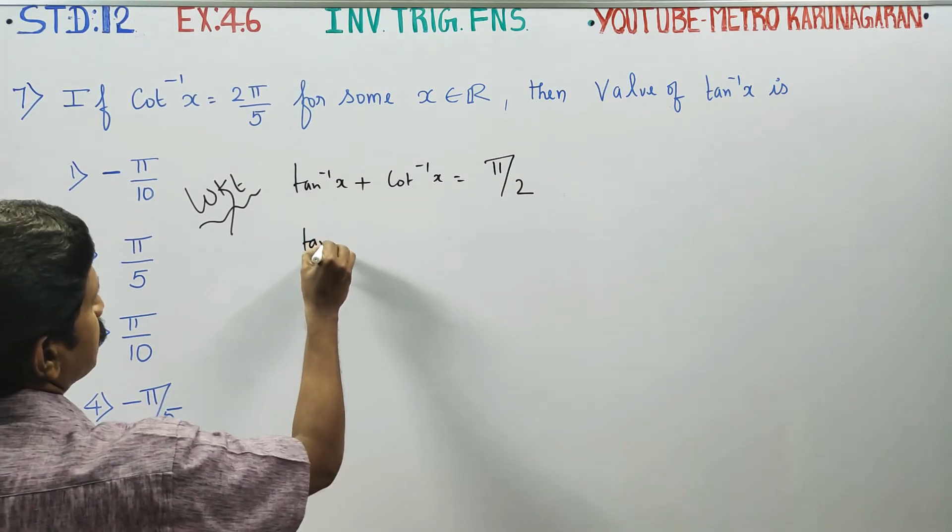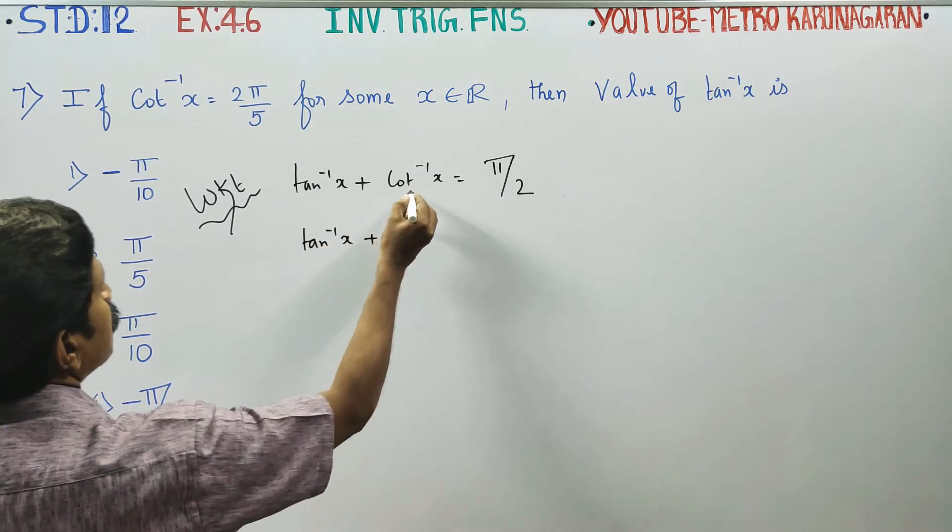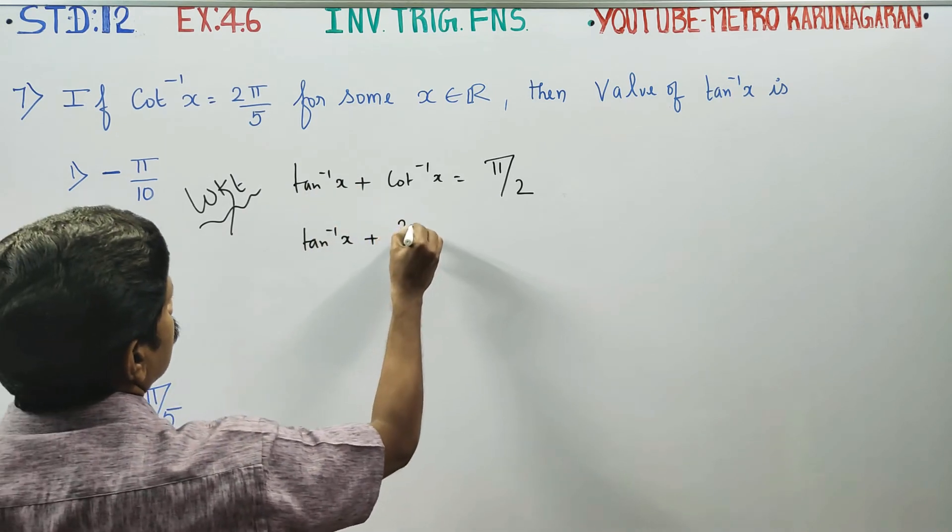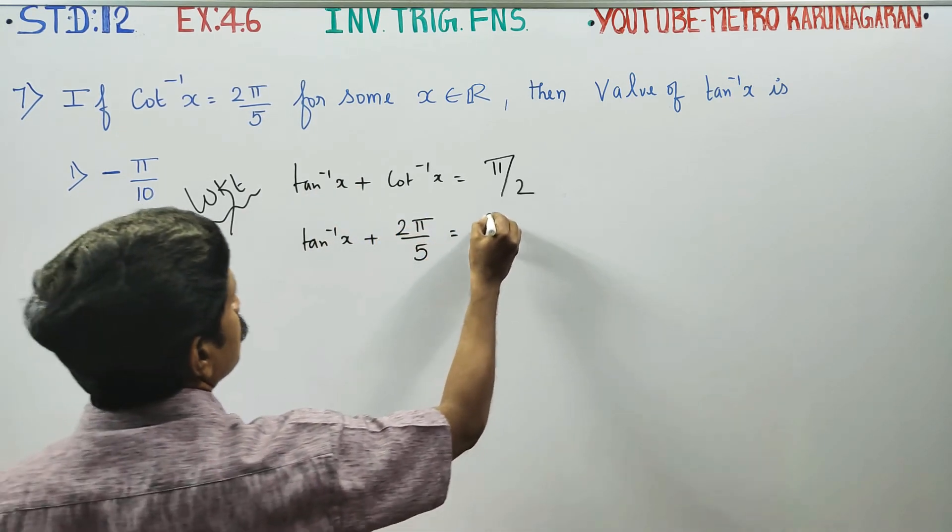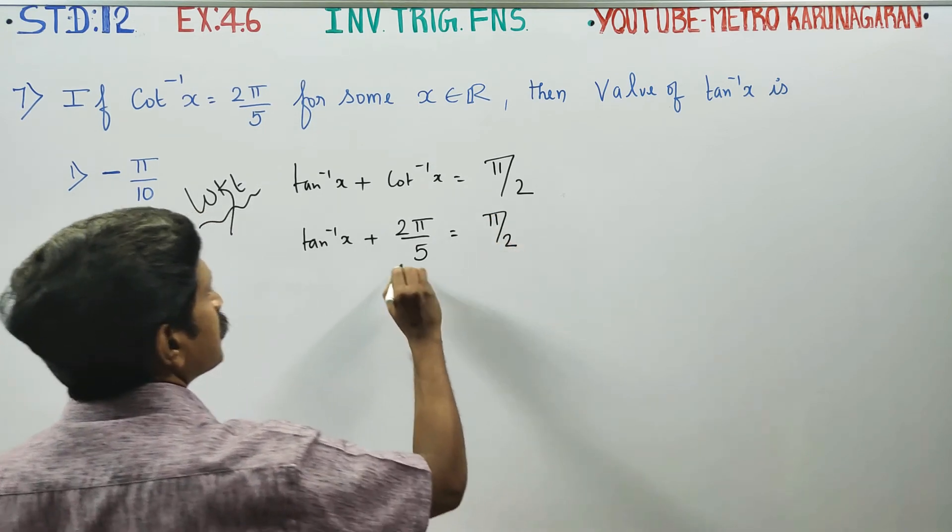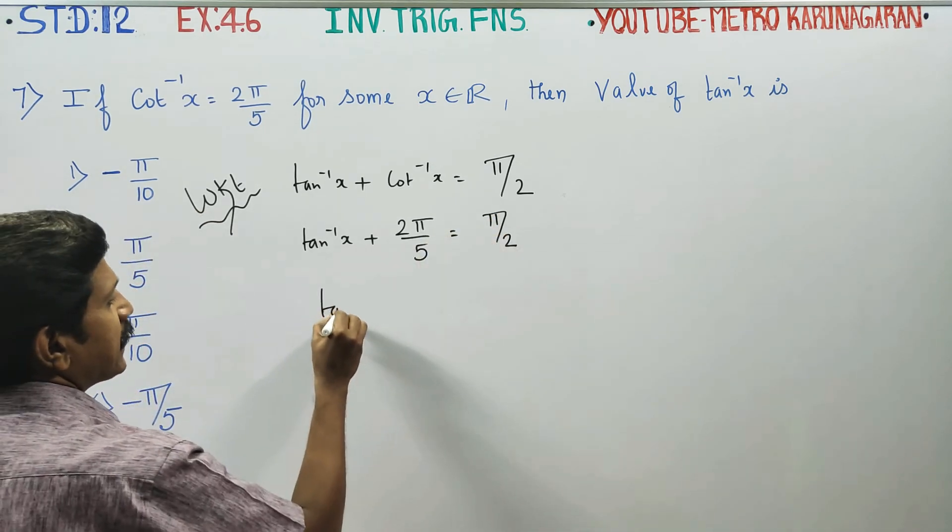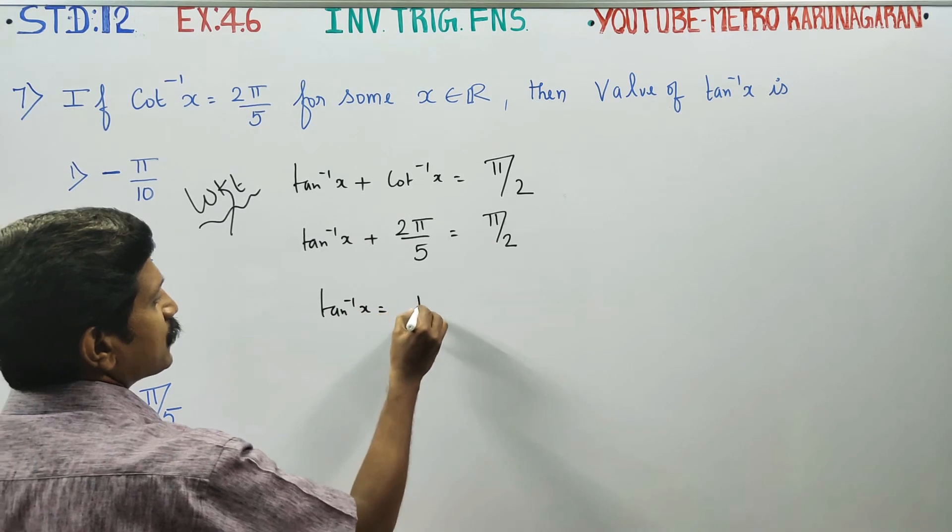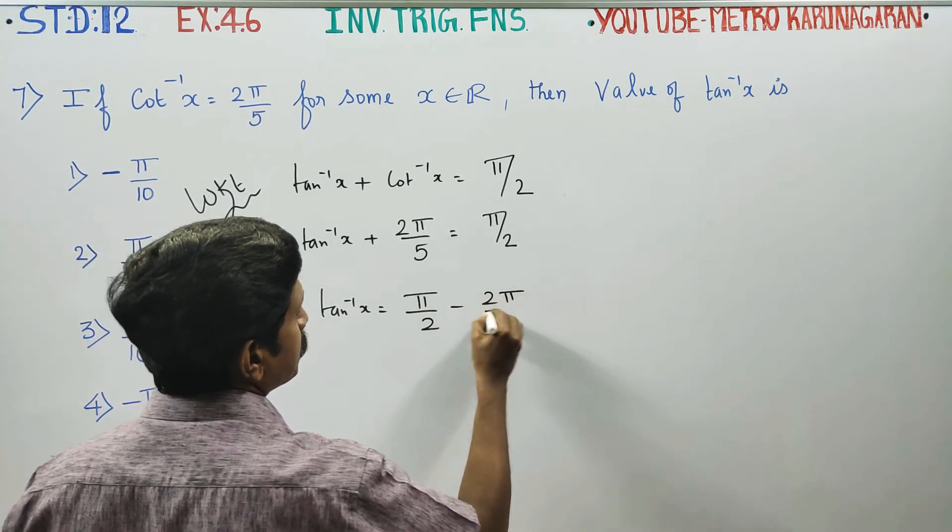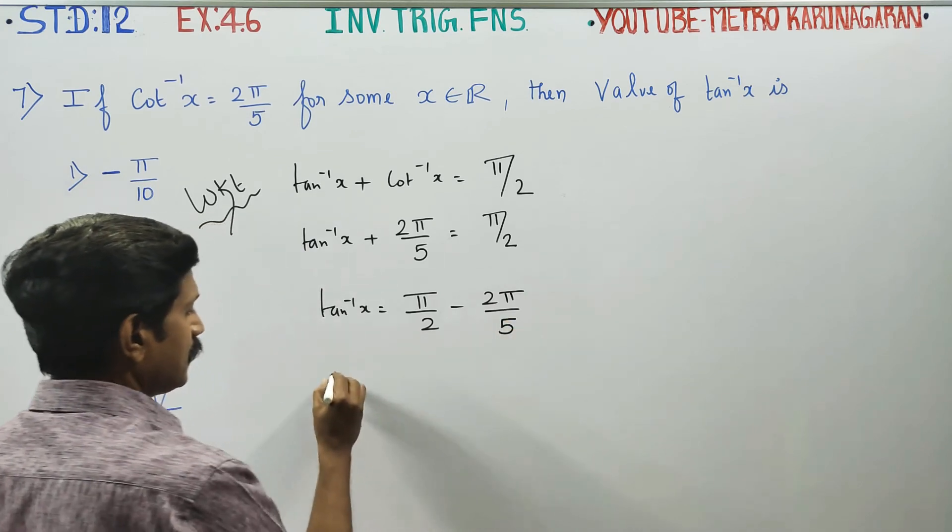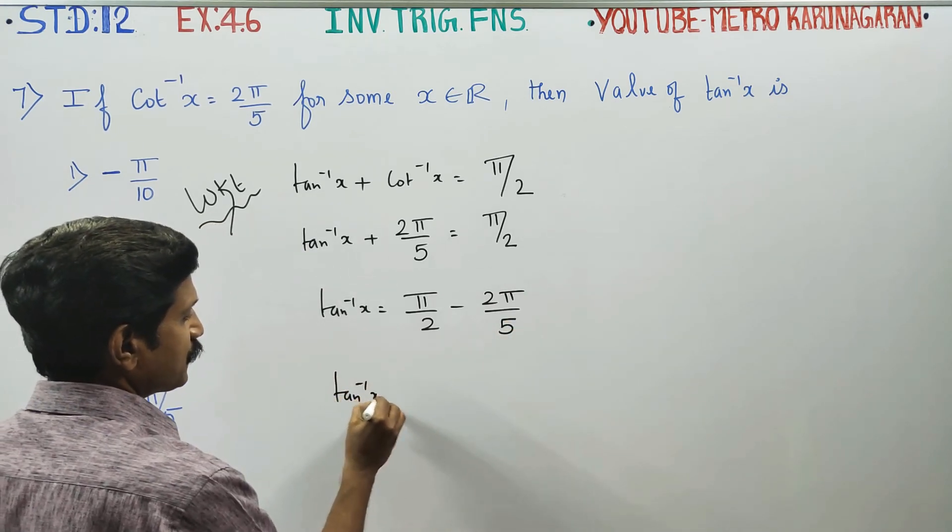Tan inverse of X – as you can see, cot inverse of X is equal to 2π/5. This is equal to π/2. Now, tan inverse of X is equal to π/2 minus 2π/5. Therefore, tan inverse of X...